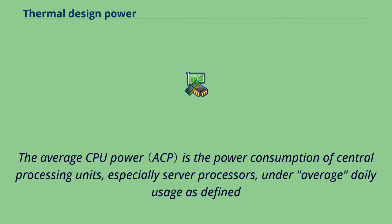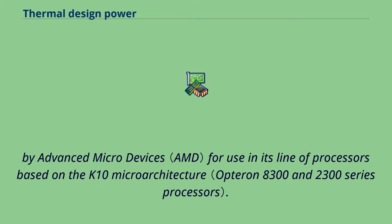The average CPU power is the power consumption of central processing units, especially server processors, under average daily usage as defined by Advanced Micro Devices for use in its line of processors based on the K10 microarchitecture.